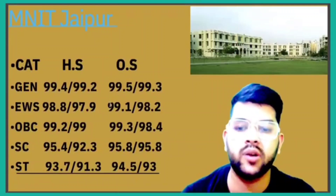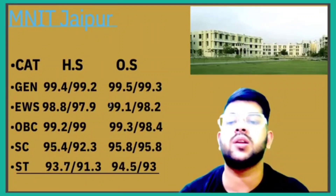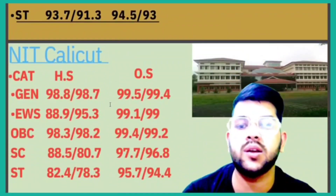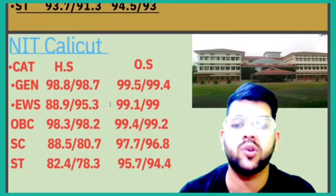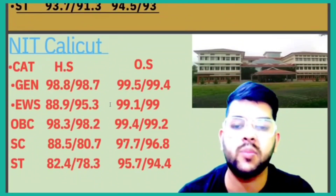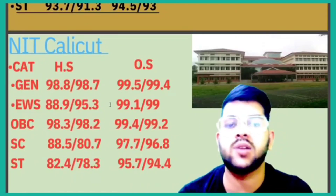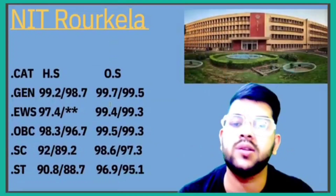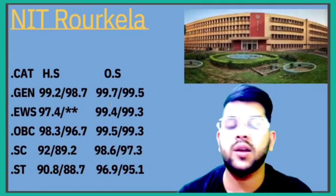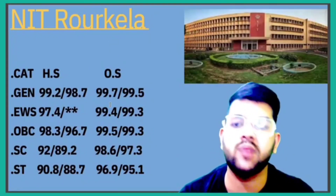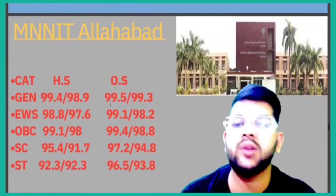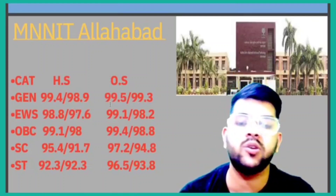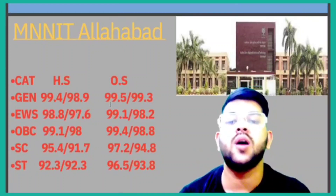For MNIT Jaipur: General 99.5, EWS 99.1, OBC 99.3, SC 95.8, ST 94.5 — that is for General, EWS, OBC, SC, ST respectively. For NIT Calicut: 99.5, 99.1, 99.4, 97.7, 95.7 percentile. For NIT Rourkela: 99.7, 99.4, 99.5, 98.6, 96.9 percentile.